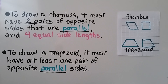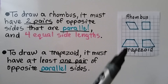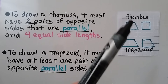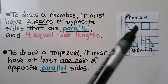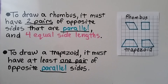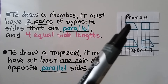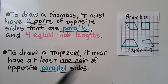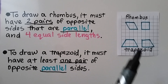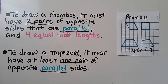To draw a rhombus, it must have two pairs of opposite sides that are parallel — here's one pair, here's another pair — and four equal side lengths. Each side needs to be the same length. That's why a square is considered a rhombus: it has two pairs of opposite parallel sides and four equal side lengths.